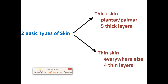There are two basic types of skin: thick skin and thin skin. Thick skin is only found on your plantar and palmar surfaces — the bottom of your feet and the front of your hand — both of which are ventral surfaces. Thick skin has five layers. Thin skin has only four layers, is quite a bit thinner, and is found everywhere else, though it varies — the skin on your eyelid is thinner than the skin on your elbow.